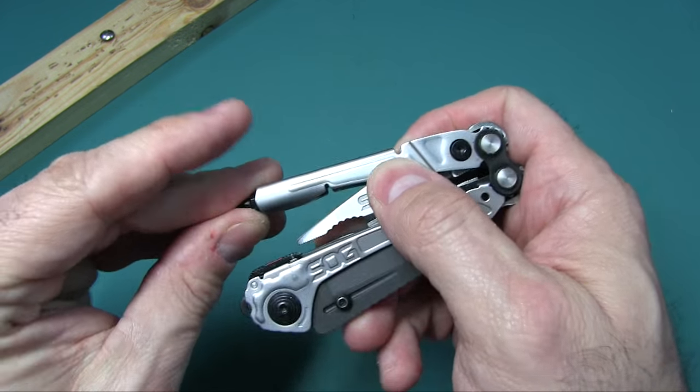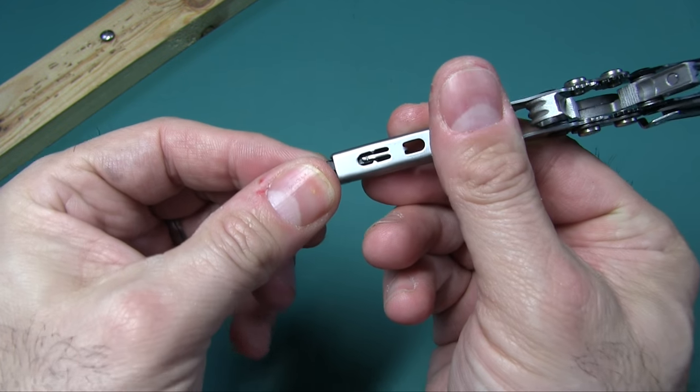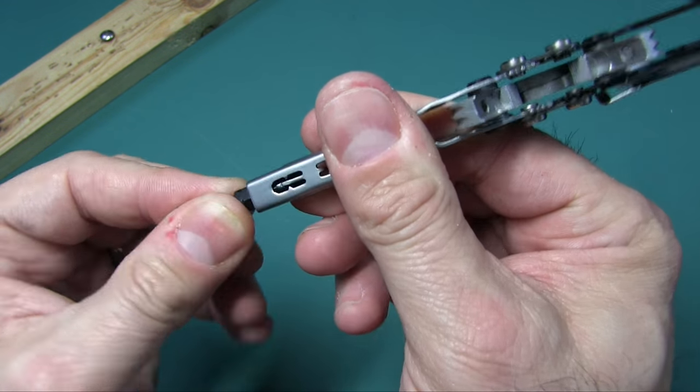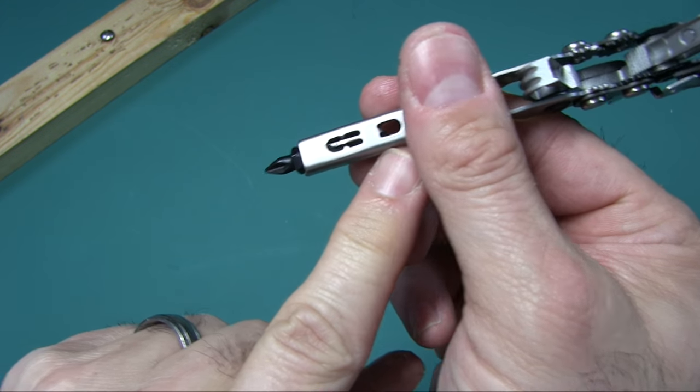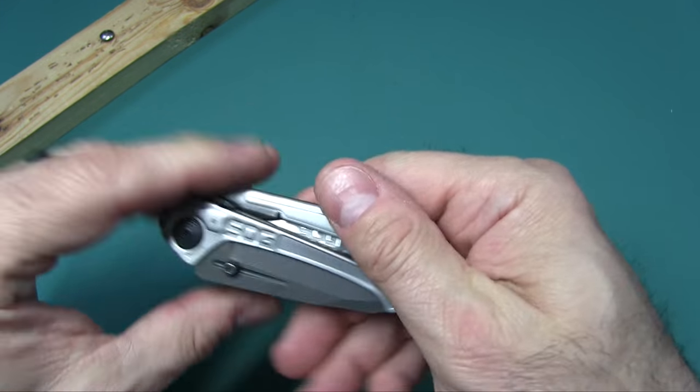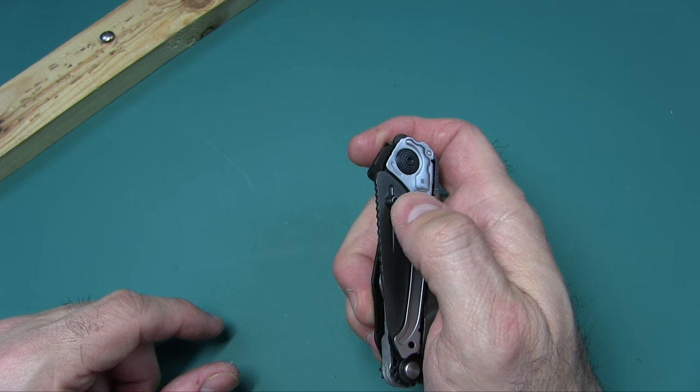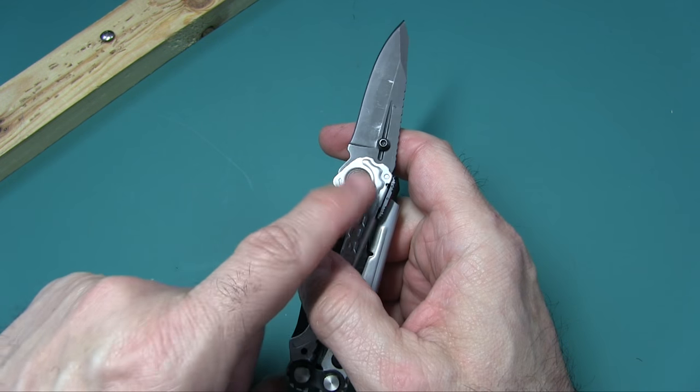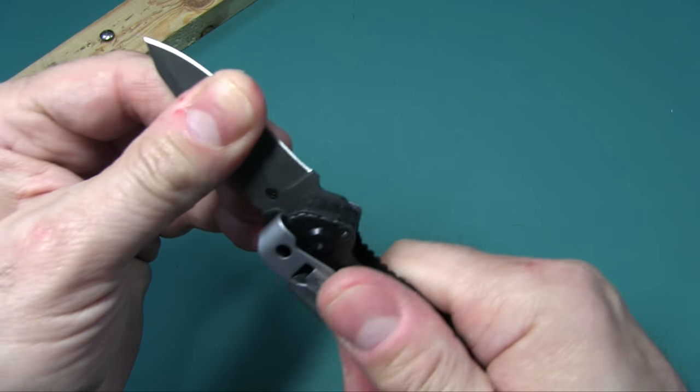What else? Also, in the reviews, a lot of people said that this little springy thing that holds this in the stowed position here eventually loosens up and you can lose your bit. And it doesn't stop there. Let's take a look at this knife. A lot of reviews, people complained that the assisted opening does eventually fail quickly. A lot of complaints about that.